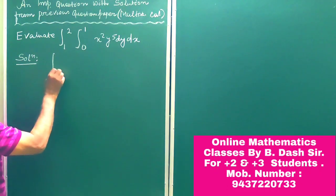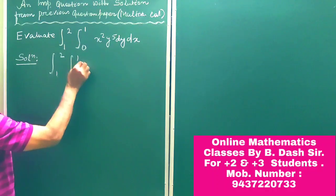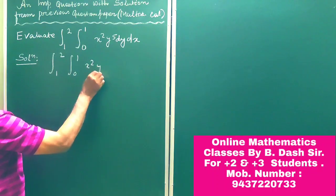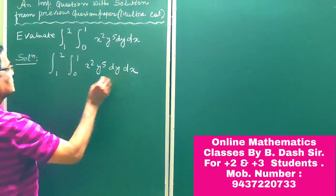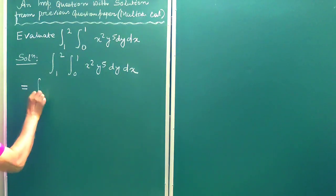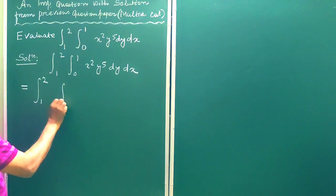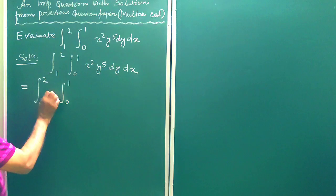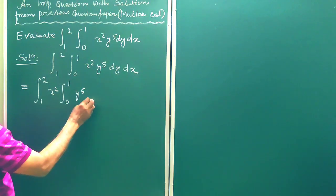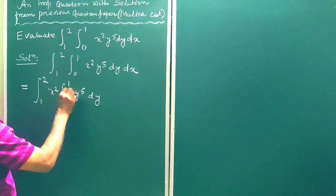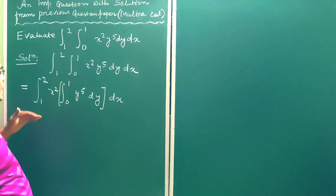Given integration 1 to 2, 0 to 1, x square y to the power 5 dy dx. So this is equal to integration from 1 to 2, this is 0 to 1, here y to the power 5 dy. This is the inner integral, the square bracketed expression is the inner integral that we have to evaluate first.